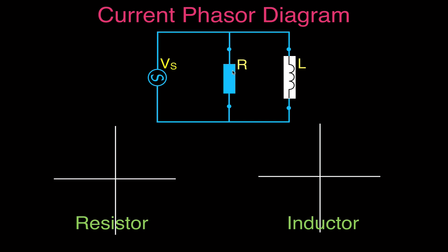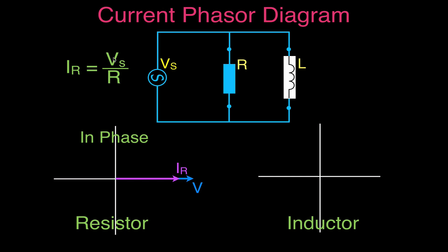As a quick review, in a purely resistive circuit the voltage and current are in phase — both the voltage and the current through the resistor are drawn in phase with no phase angle between them. The current through the resistor is simply the voltage of the source divided by the resistance, giving us the current through that branch.